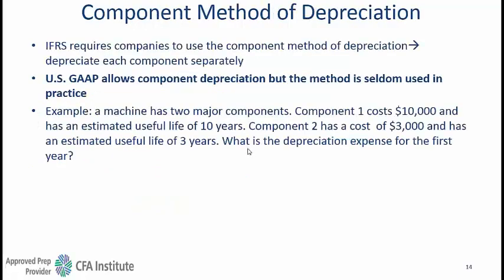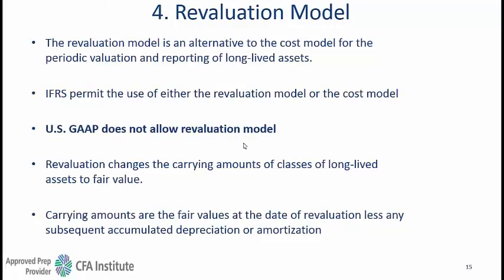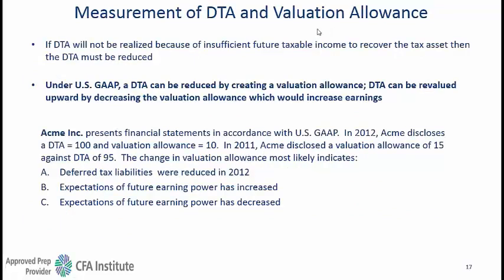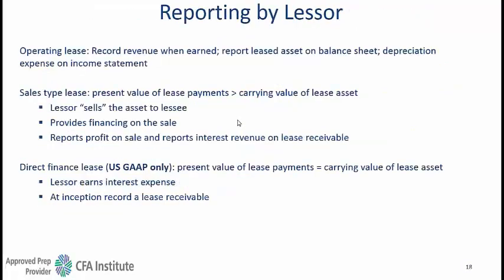The component method of depreciation is required under IFRS but not required and seldom used under US GAAP. The revaluation model is not allowed under US GAAP, and investment property is not recognized as a separate category under US GAAP — it would just use the regular cost model. The concept of valuation allowance is purely a US GAAP concept and is not used in IFRS. For reporting by lessors, the concept of a direct finance lease exists only in US GAAP; under IFRS when the lease payment and carrying value are the same, a sales-type lease is still used but with no profit on the sale.